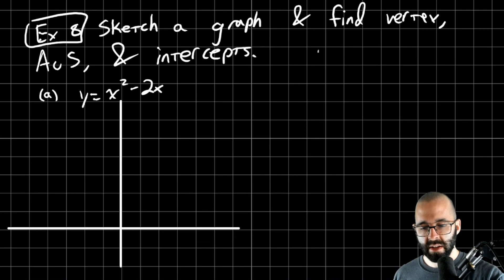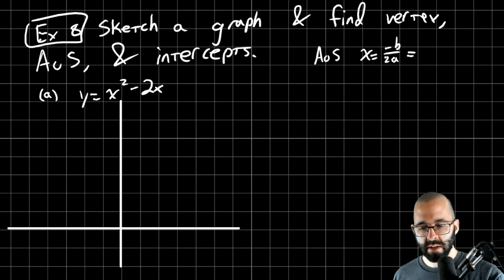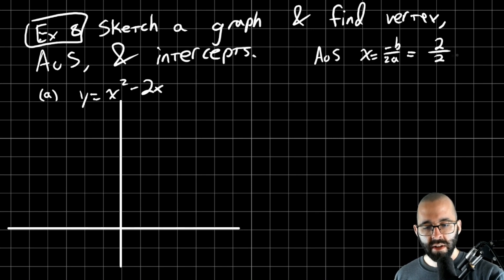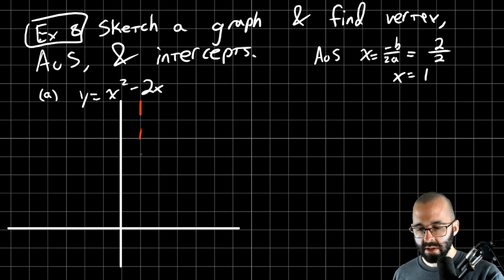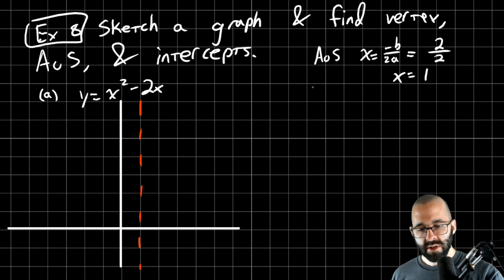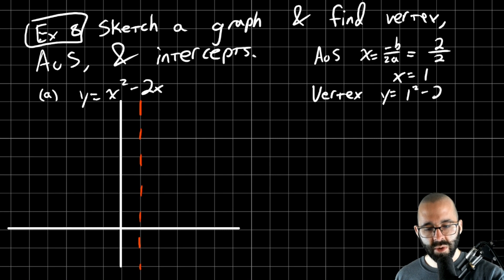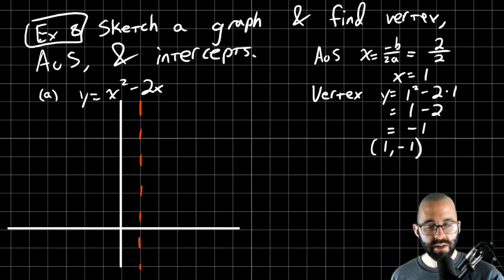For this one, let's start with the vertex and axis of symmetry. The axis of symmetry is x equals negative b over 2a — that's negative negative two for b, over 2 times a where a is 1. The axis of symmetry is the line x equals 1. The vertex: what's the y-coordinate when x equals 1? It's 1 squared minus 2 times 1, that's 1 minus 2 — the y-coordinate is negative 1. So the vertex is the point (1, -1), which should always be on the axis of symmetry.